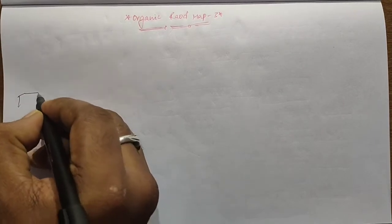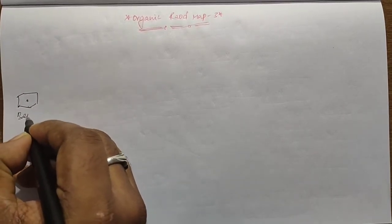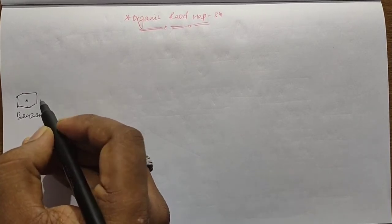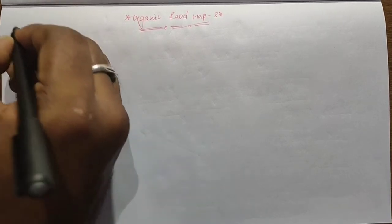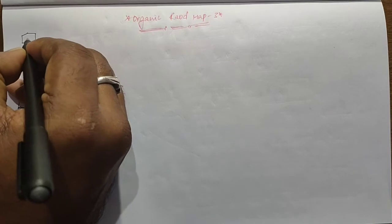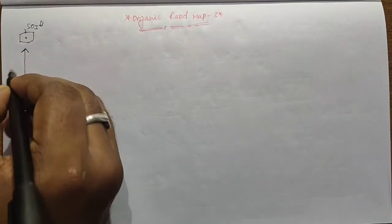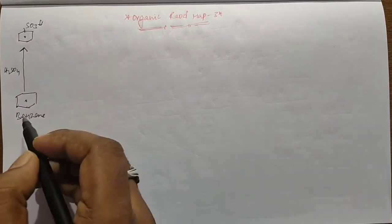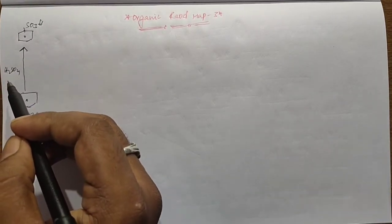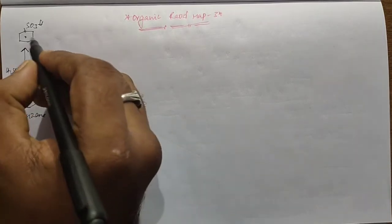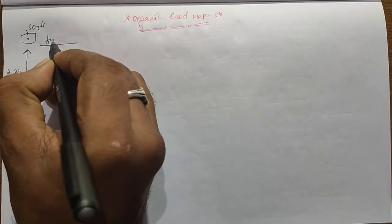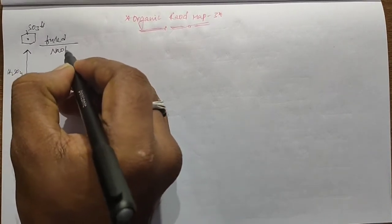This Organic Roadmap can be started with Benzene. When Benzene undergoes Sulphonation with Sulphuric Acid at below 80 degrees of temperature, it can form Benzene Sulphonic Acid. After these Benzene Sulphonic Acid is fused with NaOH solution, it can form Phenol.